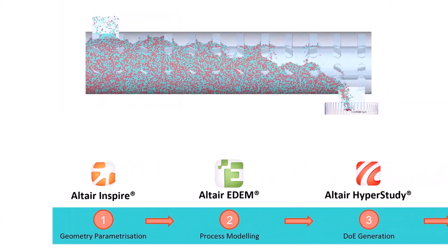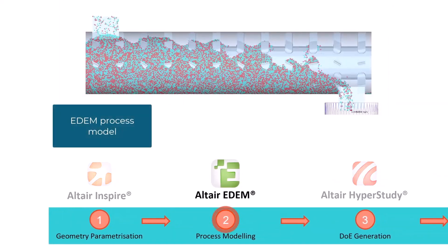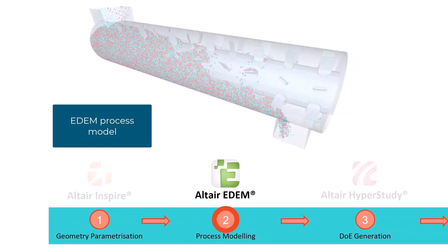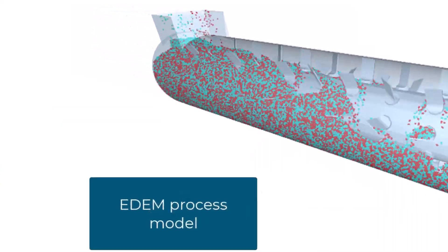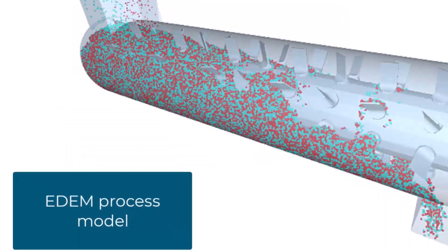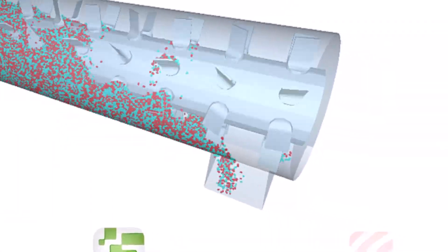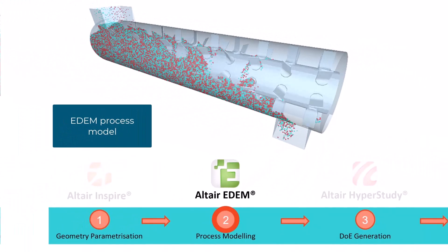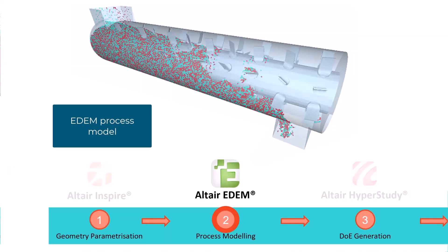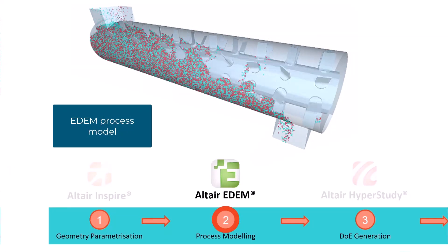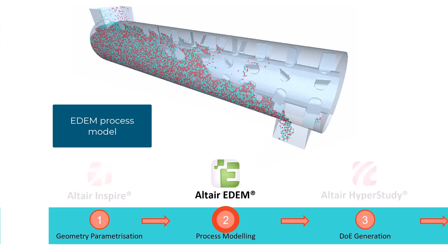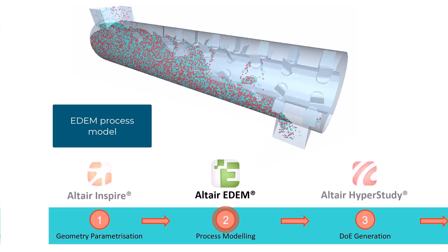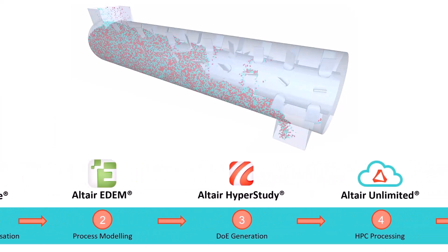Next, we will model the mixing process in EDEM, which is Altair's bulk and granular material simulation tool. In this process, we have two segregated components coming into the mixer and one homogeneous mixture at the other end. We'll use EDEM to control our operational parameters — namely the rotational speed of the shaft — and to quantify the performance of our configuration by looking at mixing uniformity, energy consumption, throughput, and cost.